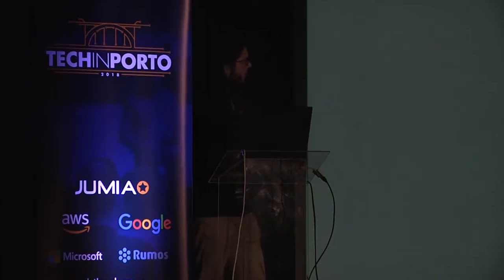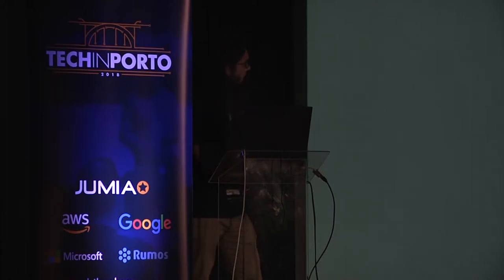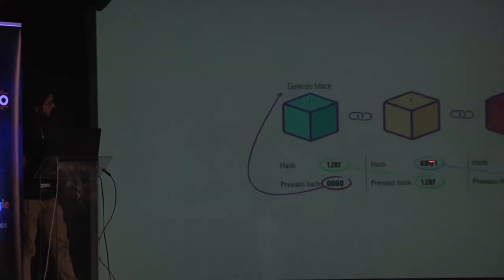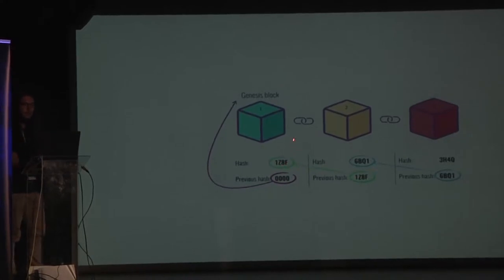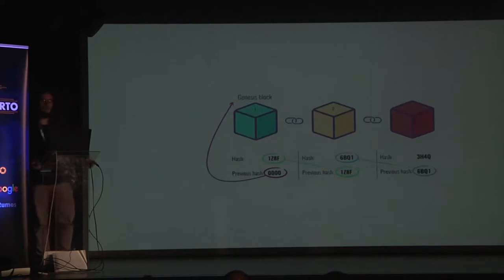For the second and third blocks, all this data — this hash here — is generated by using the previous hash plus the data on that transaction. On the first one, since there's no previous block, it needs to exist when the chain is started. So if you've ever heard that blockchain is immutable and can't be changed, it's because every block has the data of the previous block.